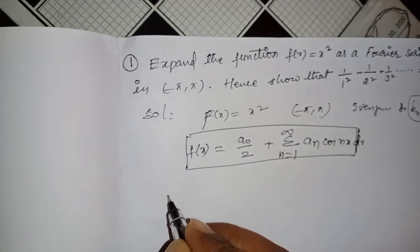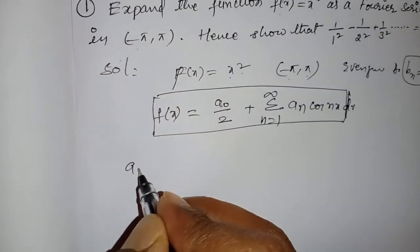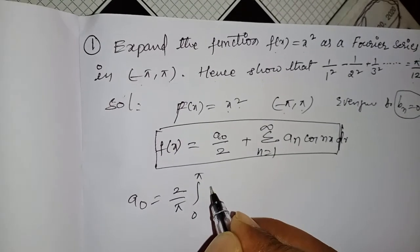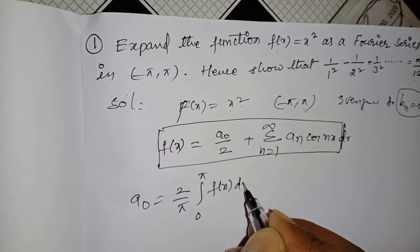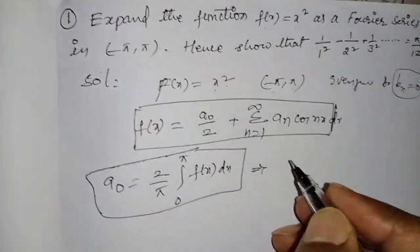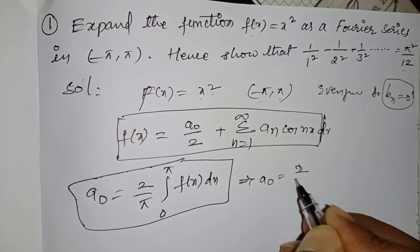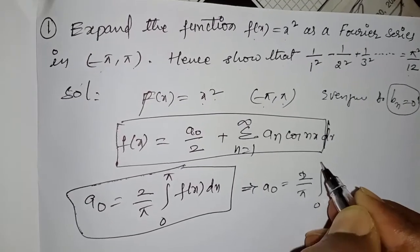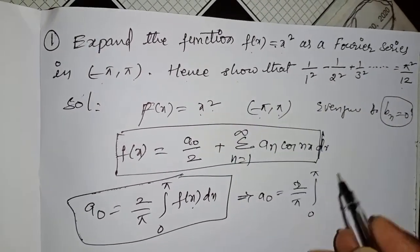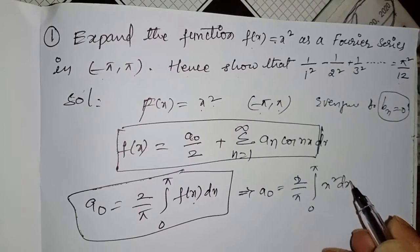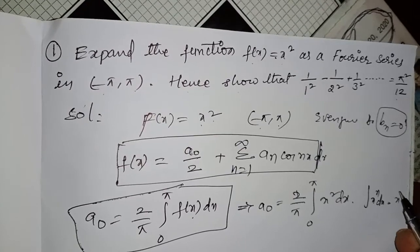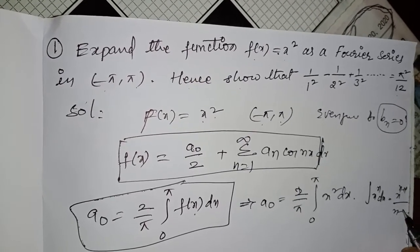First, find the a0 value. a0 = (2/π) · integral from 0 to π of f(x) dx. That equals (2/π) · integral from 0 to π of x² dx. We know that the integral of x^n dx equals x^(n+1)/(n+1).